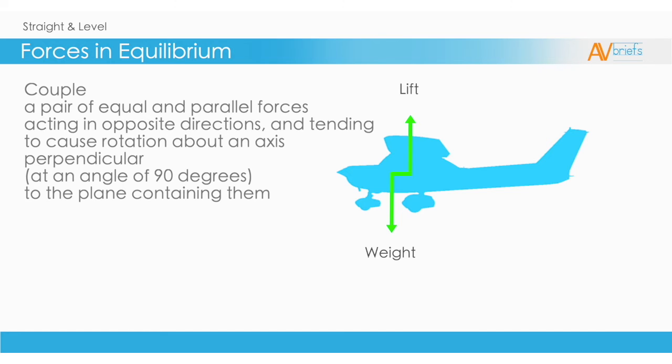Remembering back to the production of lift, when the nose is pitched up the angle of attack is increased. The increase in angle of attack creates more lift. This pitches the nose up again and you can see we would end up over-pitching and stalling the airplane.